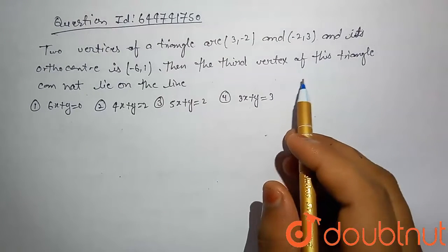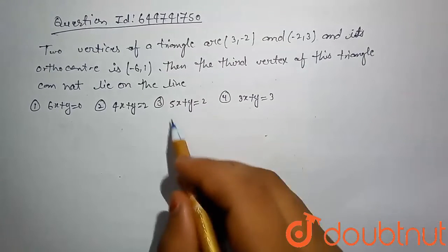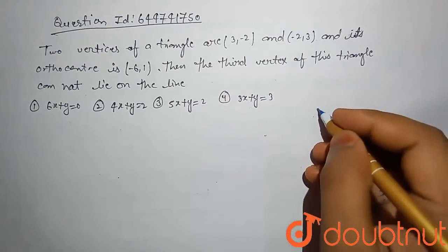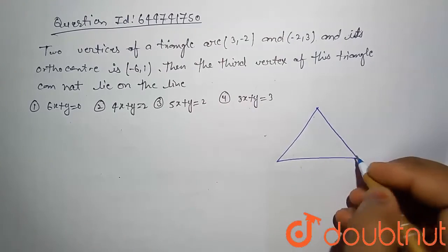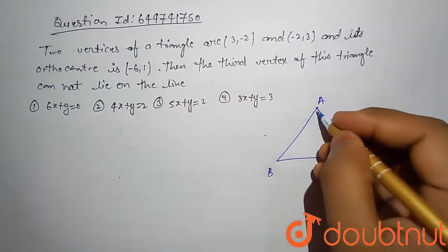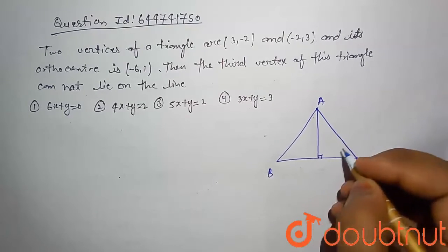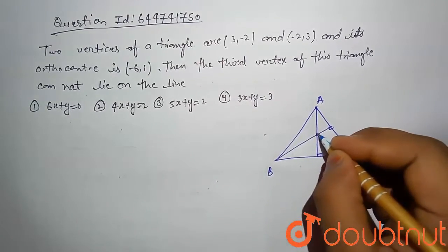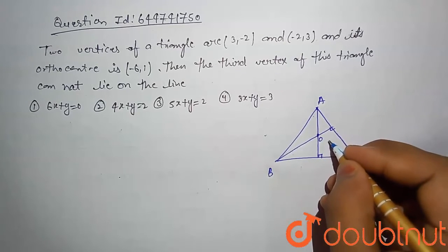First let's draw the triangle. This is triangle ABC. Here draw perpendicular, here draw perpendicular. Then this is our orthocenter. This coordinate is given (-6, 1).